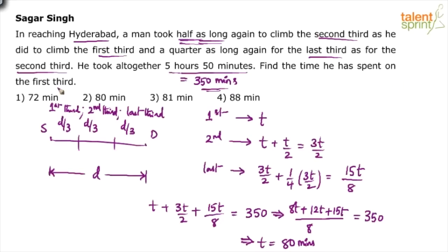80 minutes. Now what is he asking us to find out? Find the time he spent on first third. How much did he spend on first third? T minutes. So 80 minutes. Option 2 would be the answer. Suppose how much time he spent on the second third? 3 by 2 into 80, 120. How much he spent on the last third? 15 by 8 into 80. So that becomes 150 minutes. You getting it? Anyway, answer for this one should be option 2, 80 minutes.